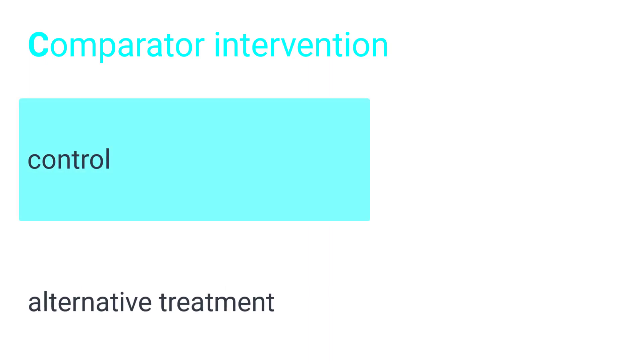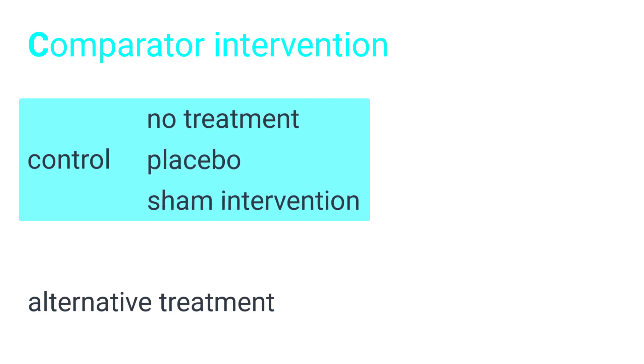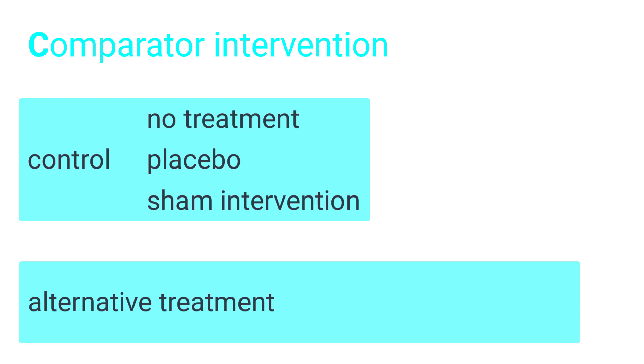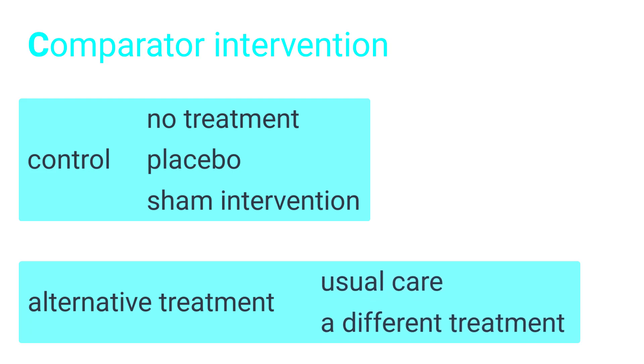The comparator intervention can be a control or alternative treatment. If it is a control, it can be no treatment, placebo, or sham intervention. Otherwise, the comparator can be any treatment you want to compare to the intervention, such as usual care or a different treatment.